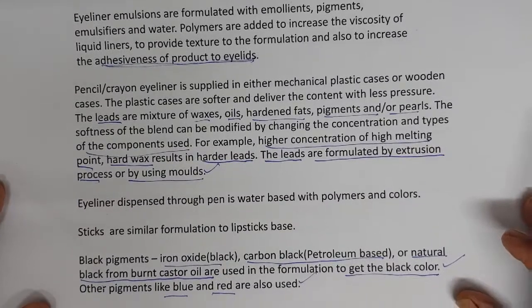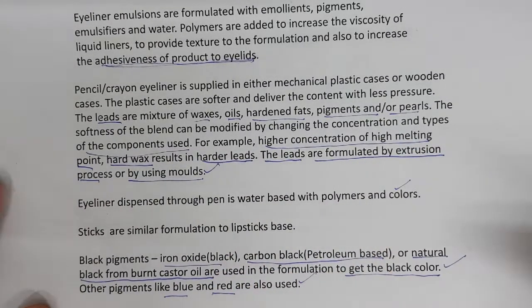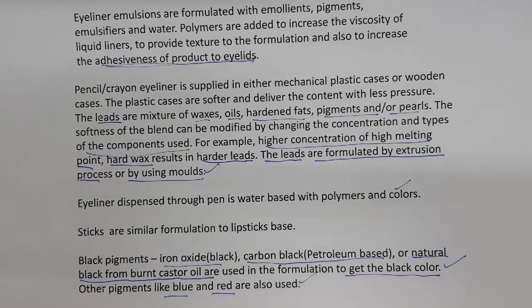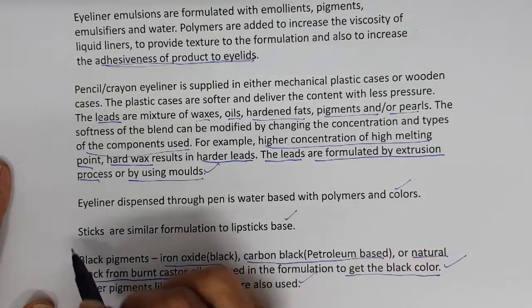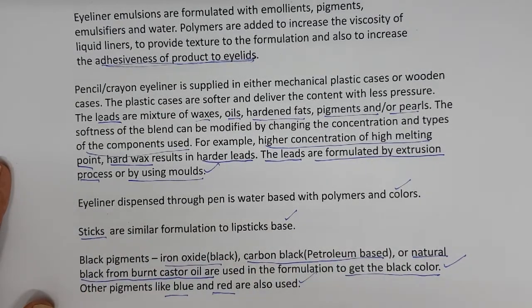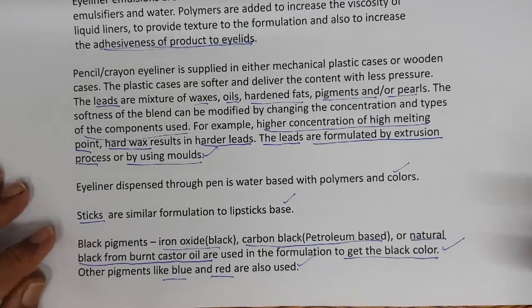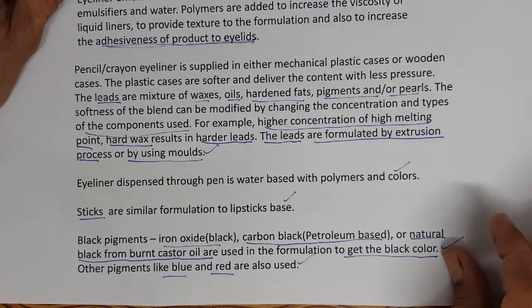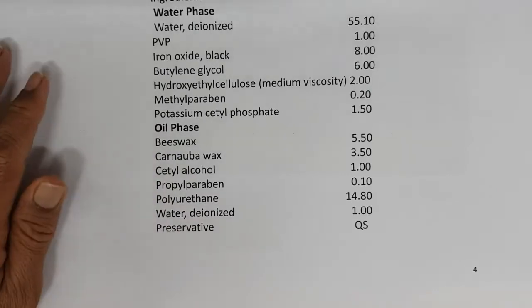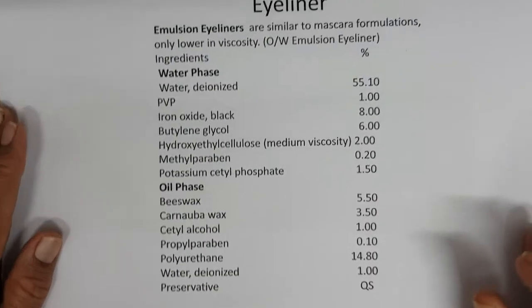In the pencil, the middle part is called the lead - same way in the eyeliner, the middle part which is the actual product is the lead. The eyeliner dispensed through pen is water-based with polymers and colors - it's a typical suspension where pigments are suspended through suspending agents in water. Sticks are similar in formulation to a lipstick base - usually the kajal in India is called kajal; it is similar in formulation to a lipstick base. Black pigments are used in these traditional formulations.